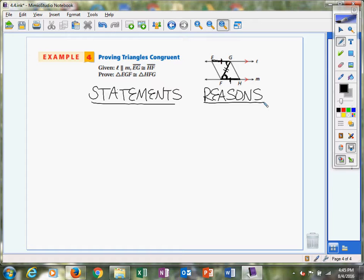I really like starting with the given. Because we're pretty sure that we want to use side angle side, let's start with the one side that we do know that's given, and that's EG is congruent to HF. We know that because that was given originally.